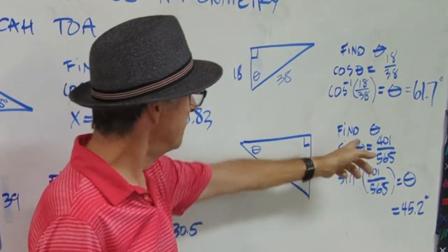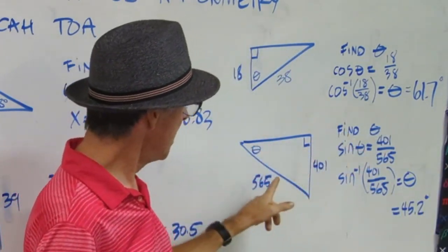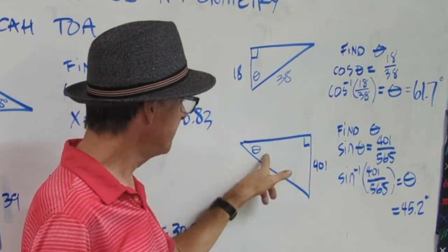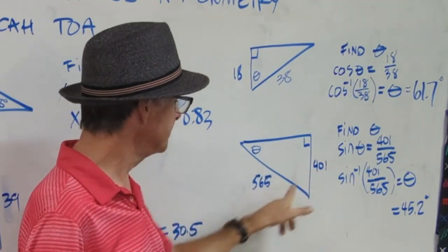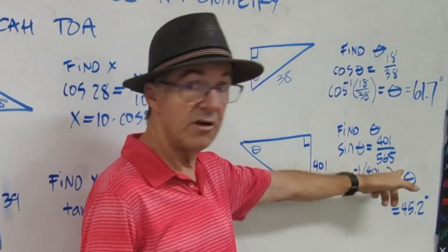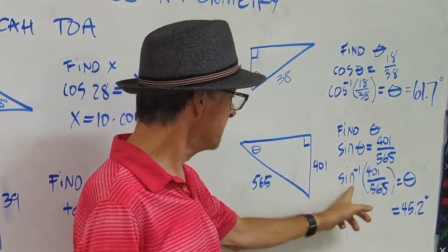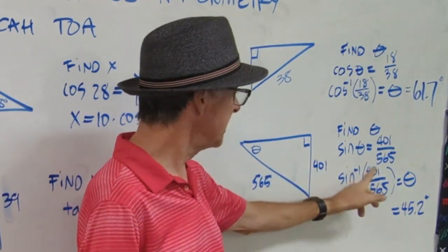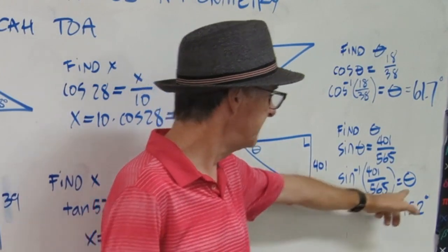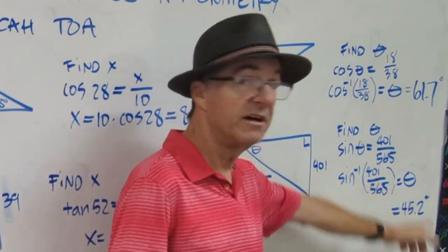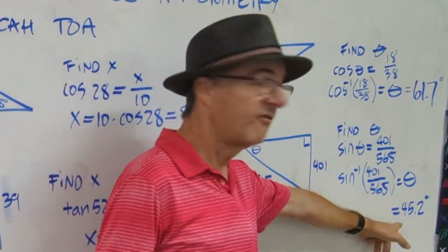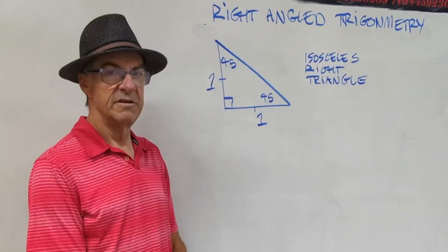For the next one, I recognize that I need sine. From theta, I have opposite over hypotenuse, so sine theta is 401 over 565. I take the inverse sine function of that fraction — that's theta. Put it in my calculator, and what I get is 45.2 degrees.